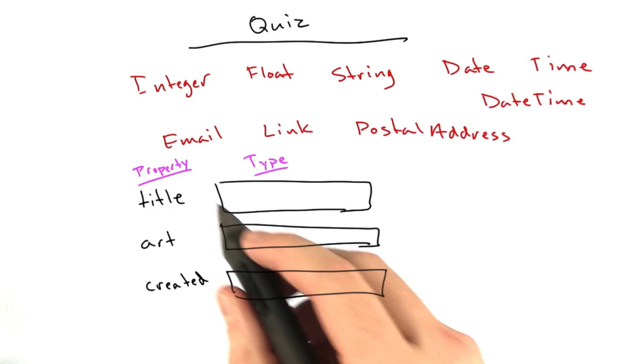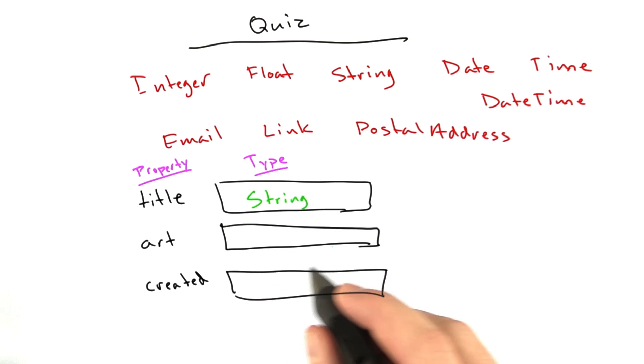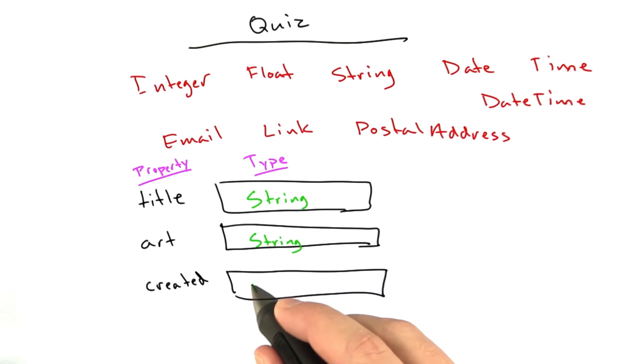Okay, so the correct answer is: for the title, we're going to use a string. For the art, we're also going to use a string. And for the created, we're also going to use a datetime.